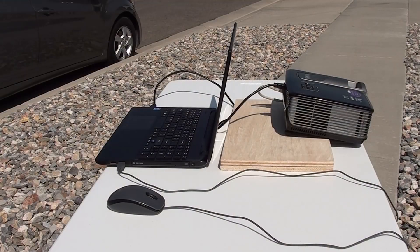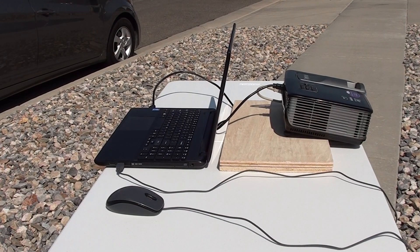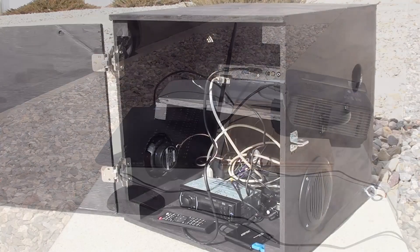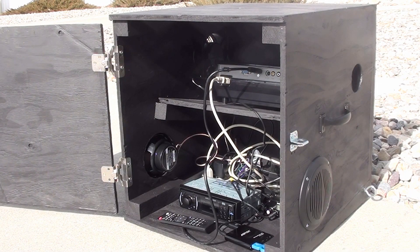Don't be surprised if you have to put something under the back legs of the projector to aim it down. Most projectors are designed to throw an image up onto a wall, but you're going to want to cover your house all the way to the ground. Here I'm using some spare boards to prop up the rear of the projector. Our projector box comes with a tilted shelf inside so you won't have to worry about it.